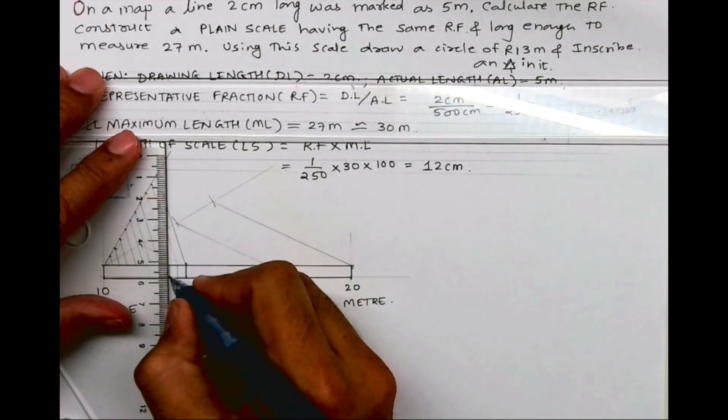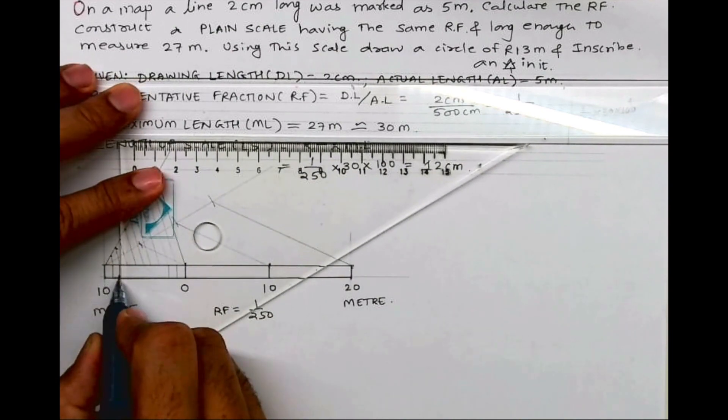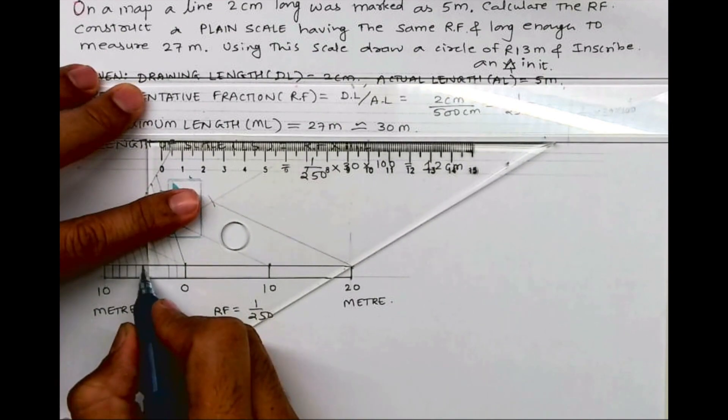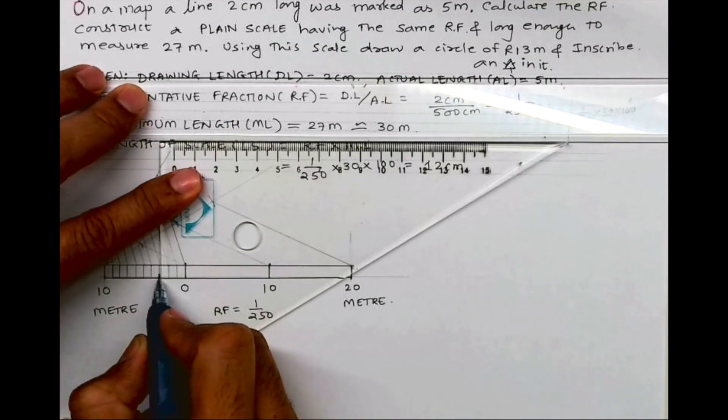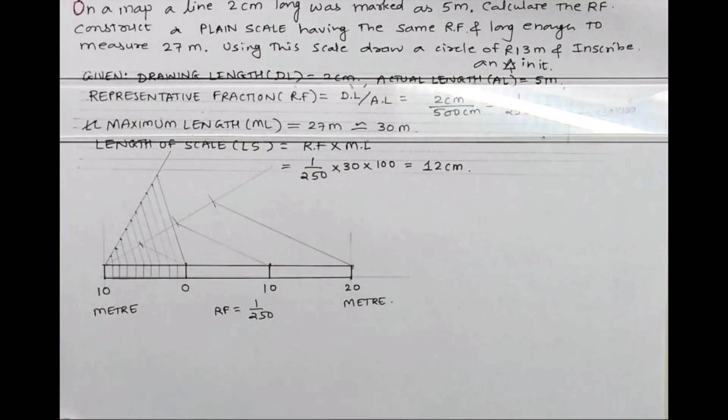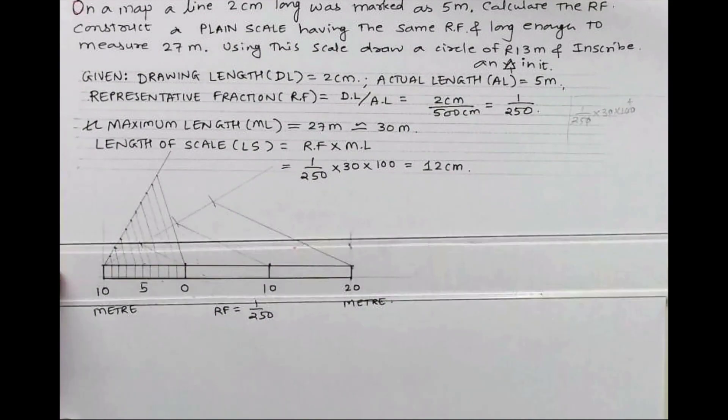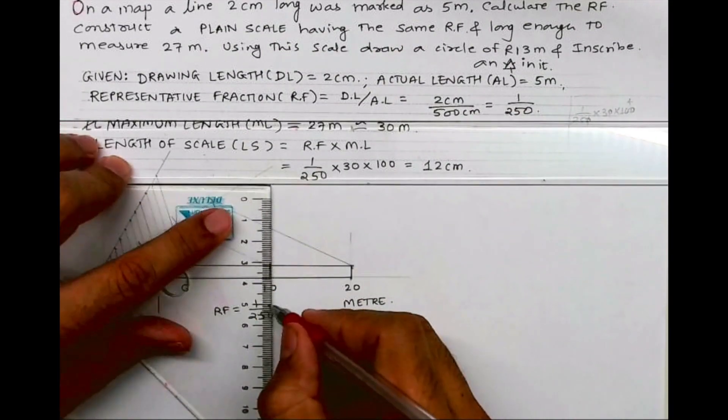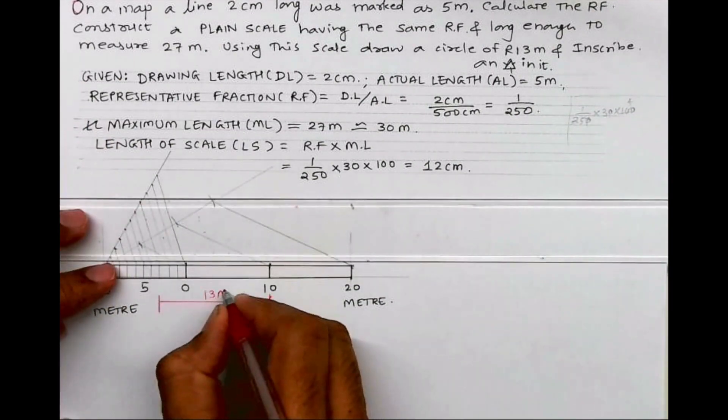Now you draw a vertical line. So you divided the first block into 10 parts. Now we have to mark 13, right? So I will take 10 and 3 from here, 10 from here, and draw a line. So this is 13 m.